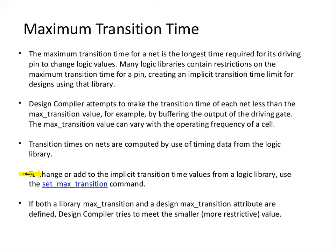If you want to make constraints more restrictive, you could use the set_max_transition command. If both the library max_trans and the set_max_transition attributes are defined, DC will try to meet the more restrictive value. When starting synthesis, it is recommended not to use set_max_transition — it is used for specific cases where you want very good transition on a particular part of the circuit.